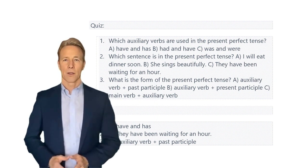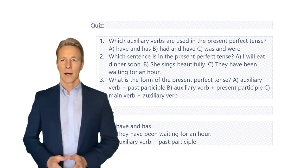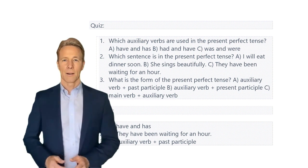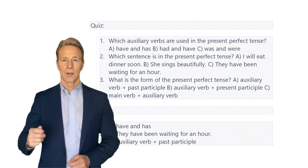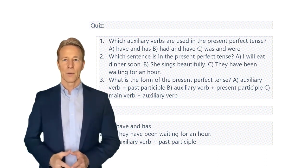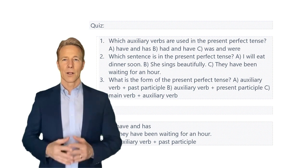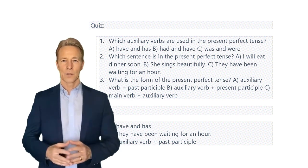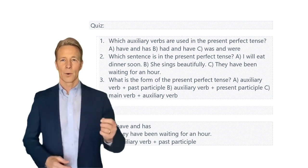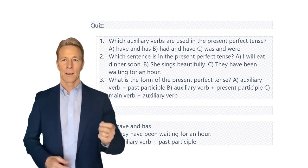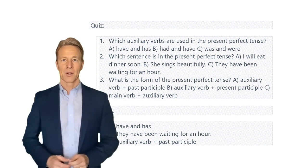What is the form of the present perfect tense? A. Auxiliary verb plus past participle. B. Auxiliary verb plus present participle. C. Main verb plus auxiliary verb.